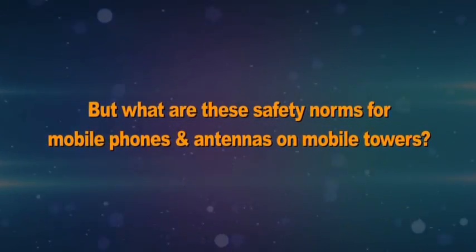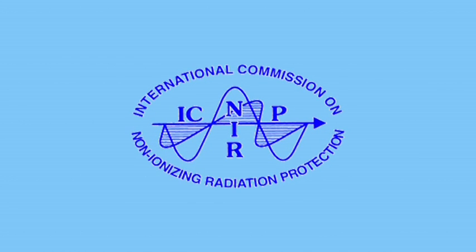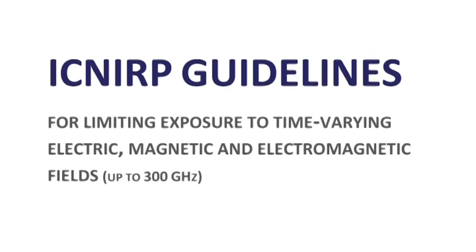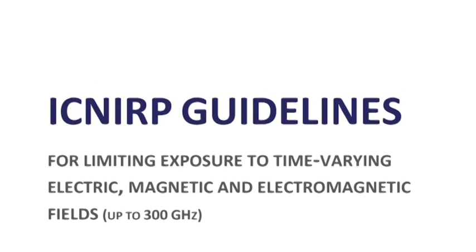But what are these safety norms for mobile phones and antennas on mobile towers, and how safe is safe? The industry is very concerned about safety norms and the exposure of citizenry to emissions from towers and handsets. The Government of India is the responsible entity that sets the safety norms. After extensive consultation and investigation, the Government of India decided in 2008 to adopt the best-in-class standard in terms of safety. The safety limits for mobile telephony were set in 1998 by the International Commission on Non-Ionizing Radiation Protection, ICNIRP.